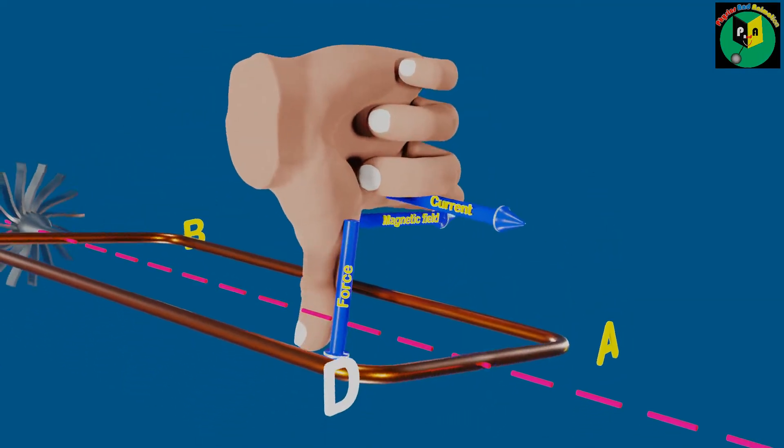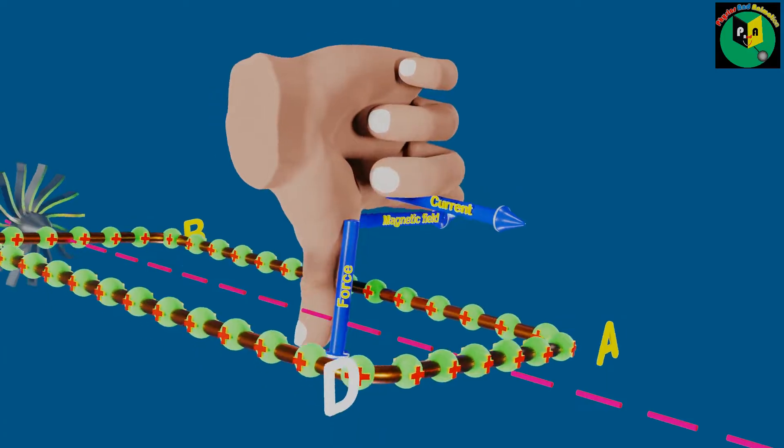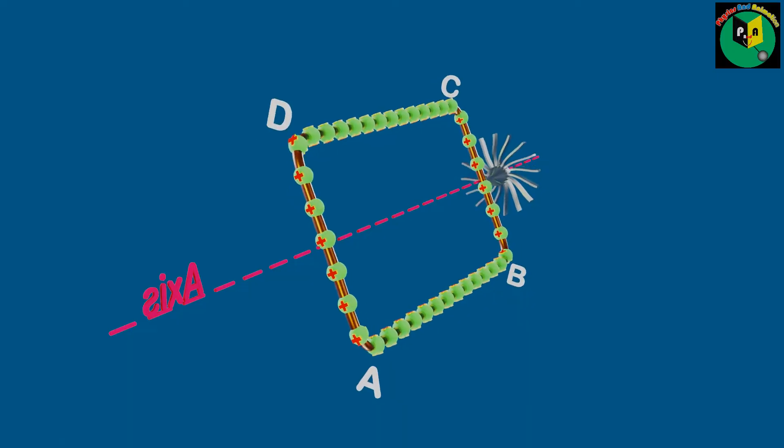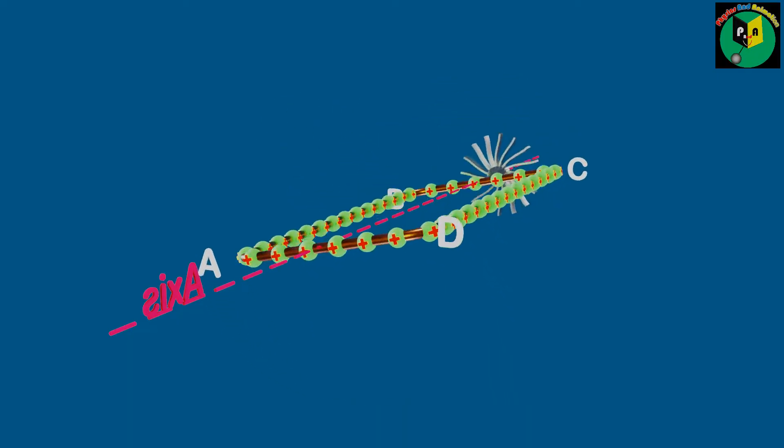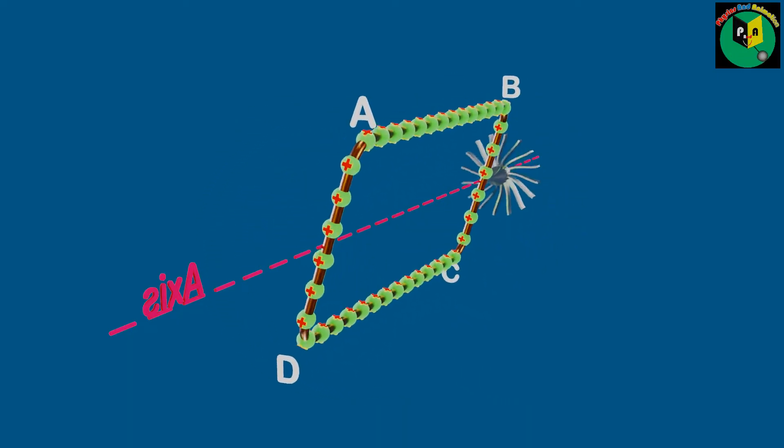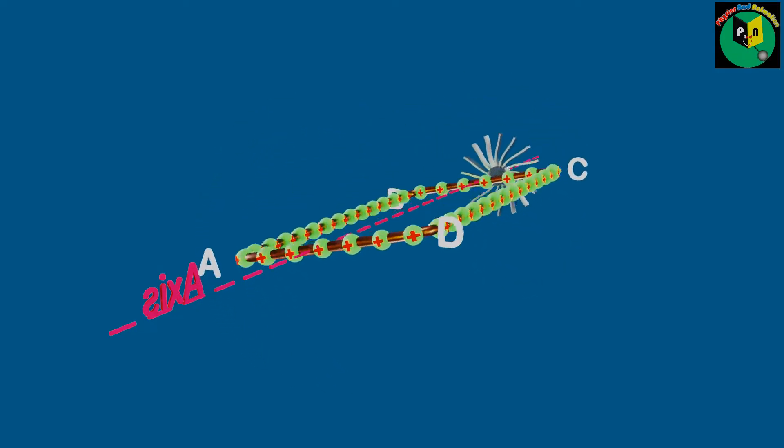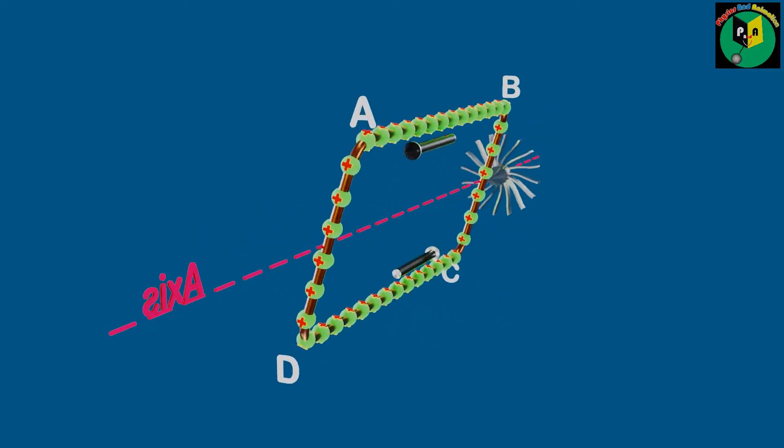Then surprisingly, direction of the current induced indicated by the middle finger is from point B to A, which is opposite from the case when arm AB was moving upward. A similar thing also occurs with the arm CD of the coil. Thus, after every 180 degrees or half of the complete rotation of the coil, the direction of induced current in the arm AB and CD of the coil reverses.